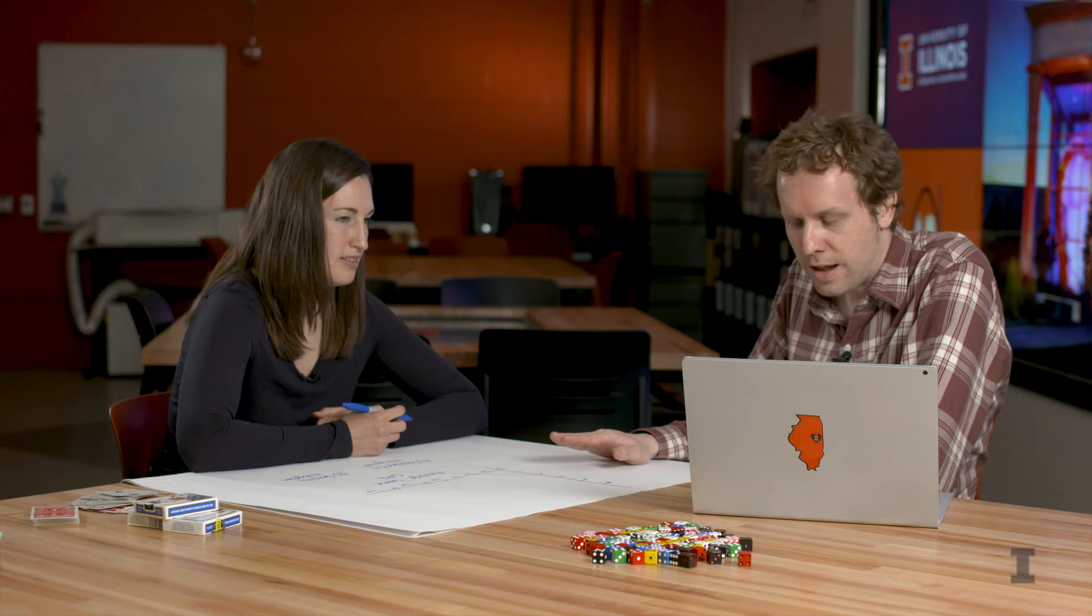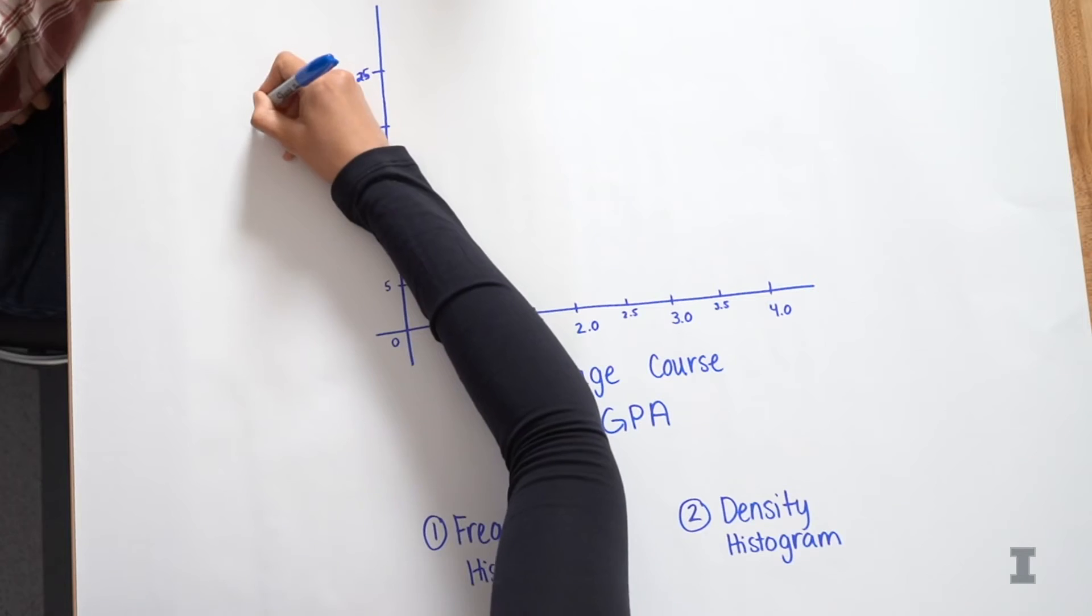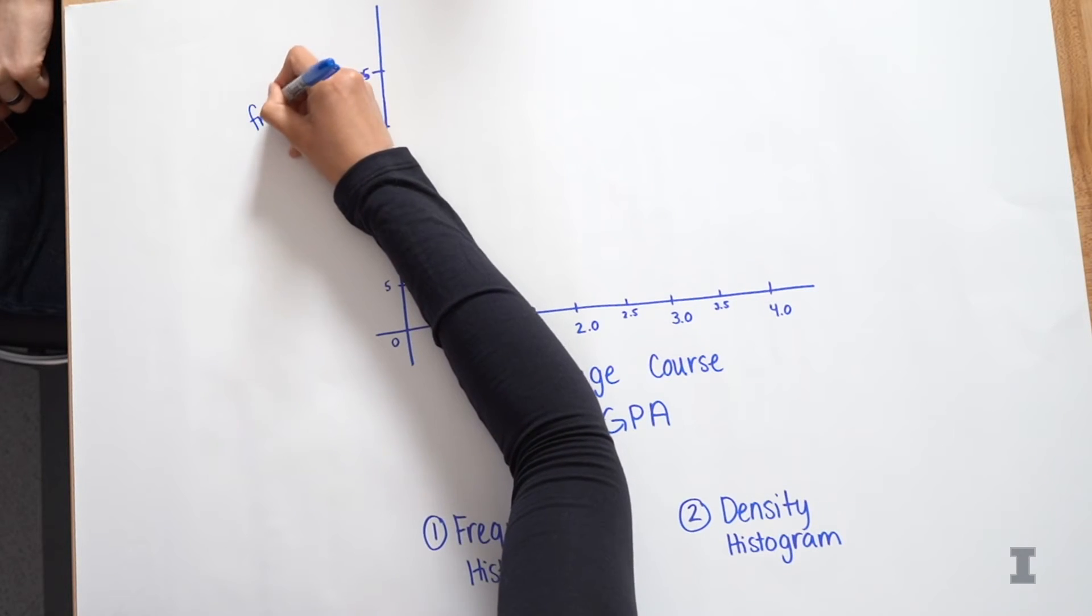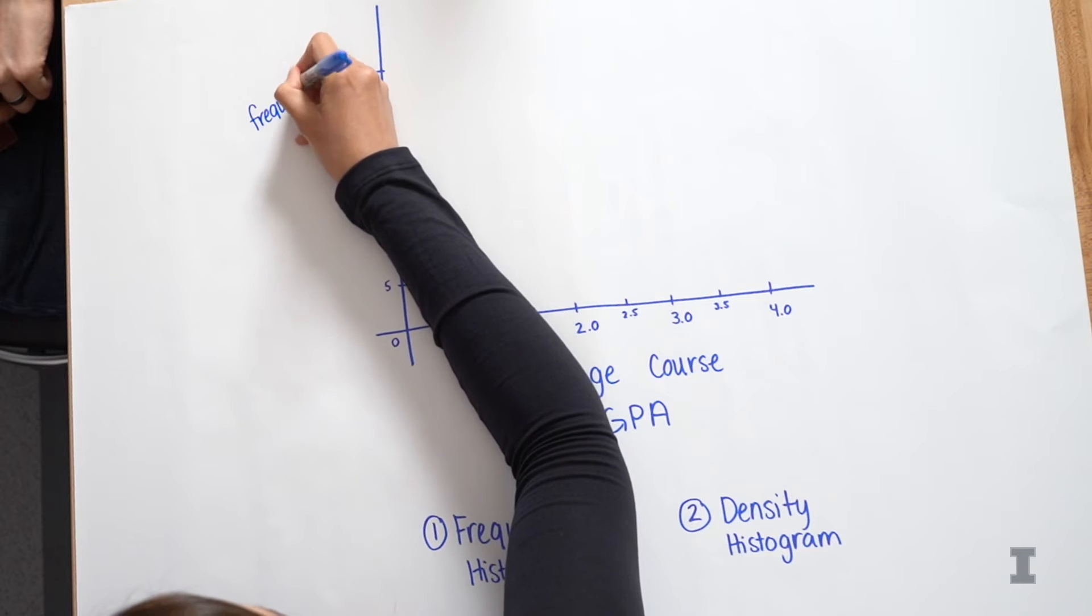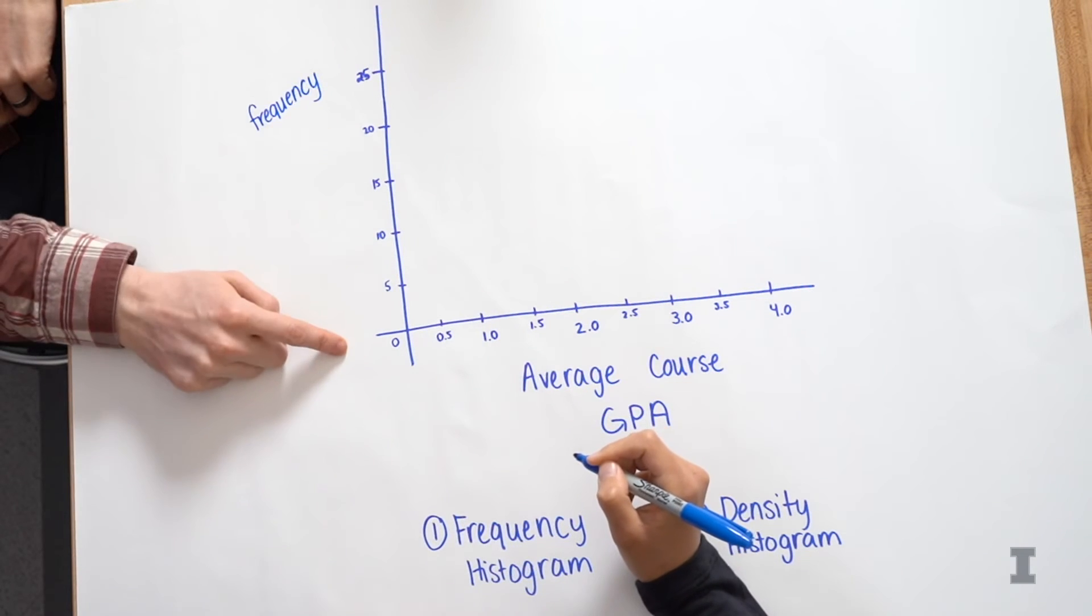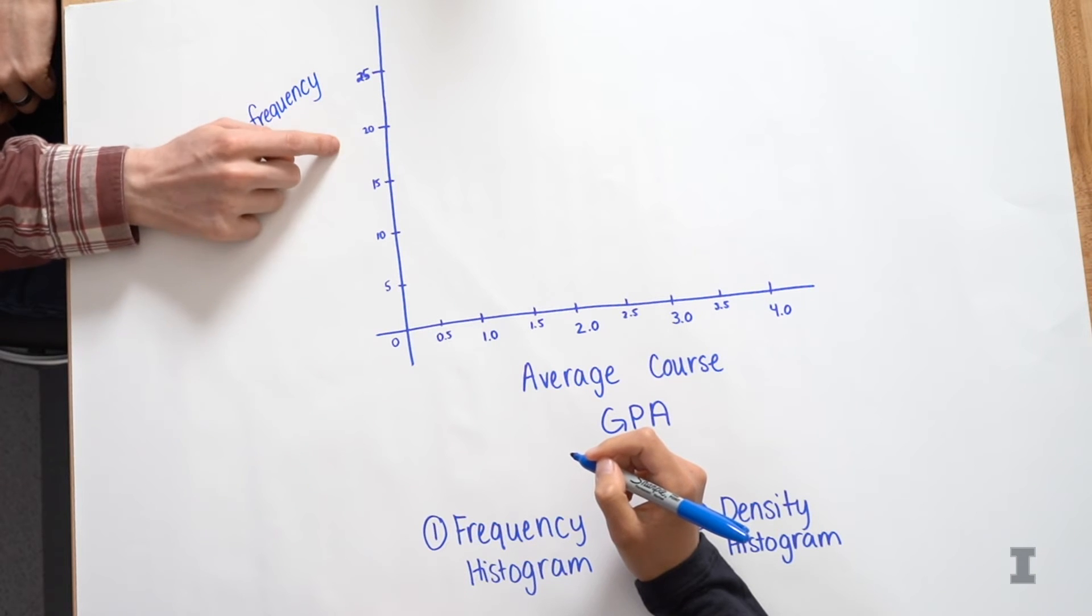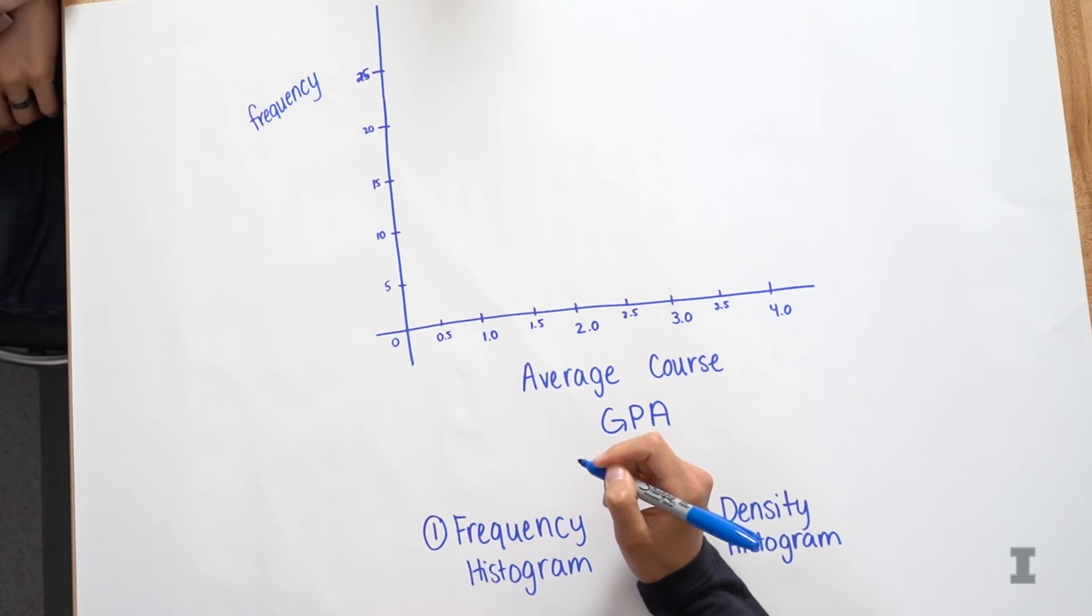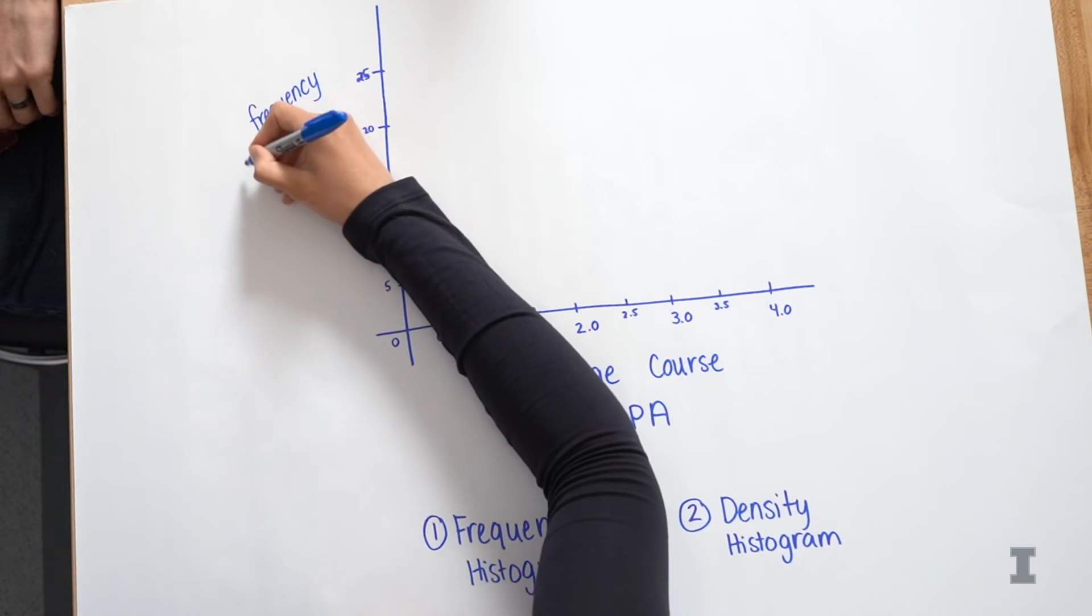So let's go ahead and figure out the frequency of these GPAs. So let's label this axis. I see that if we do 0.5 bins, I see that we're going to have up to 22,000 students or 22,000 courses. So in this frequency histogram, it looks like our y-axis is going to be the number of courses with various different average GPA in thousands.